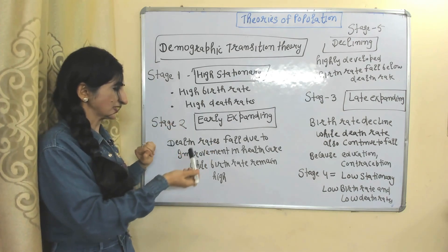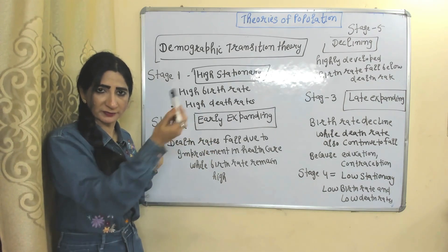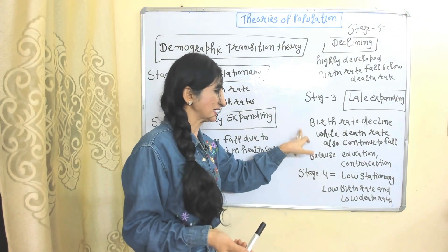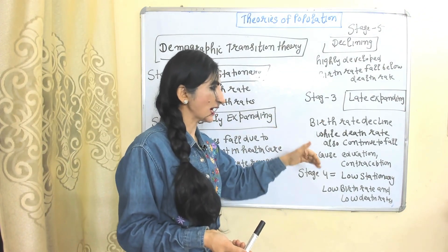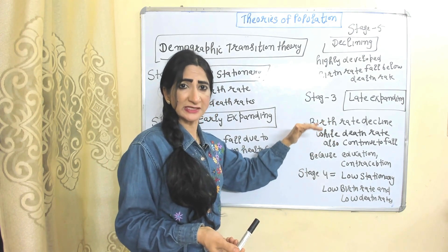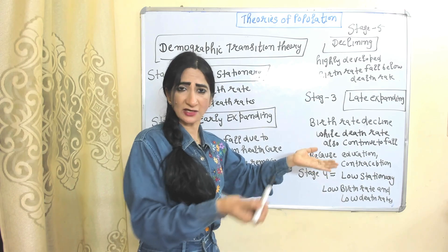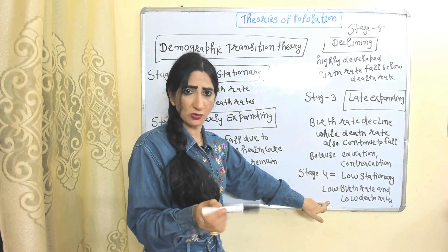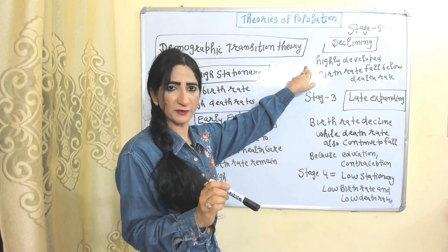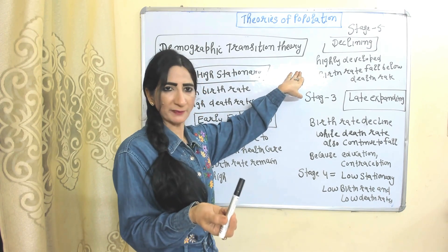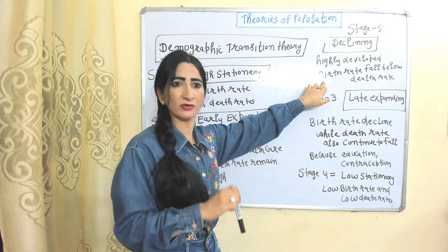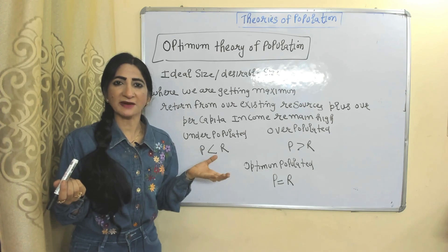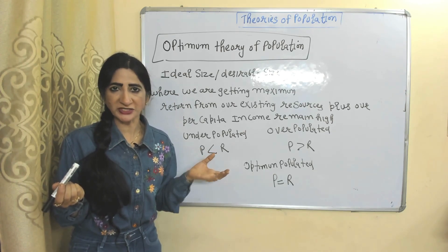The second important theory is the demographic transition theory. Stage 1 — High Stationary: high birth rate and high death rate. Stage 2 — Early Expanding: death rate falls due to improvement in healthcare, but birth rate remains high. Stage 3 — Late Expanding: birth rate is declining while death rate also continues falling, because people are becoming educated and using contraception. Stage 4 — Low Stationary: low birth rate and low death rate. Some also propose a fifth stage — Declining — which belongs to highly developed countries where the birth rate is below the death rate.